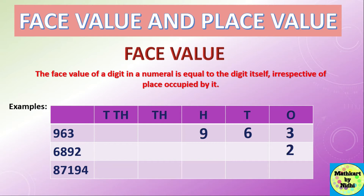Similarly, for 6892, the face value of 2 is 2, the face value of 9 is 9, the face value of 8 is 8, and the face value of 6 is 6. In the next example, 87194, the face value of 4 is 4, the face value of 9 is 9, the face value of 1 is 1, and the face value of 7 is 7.